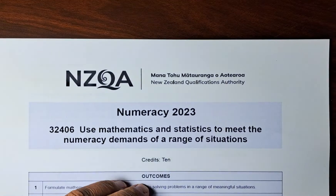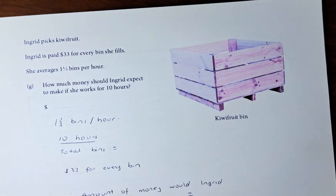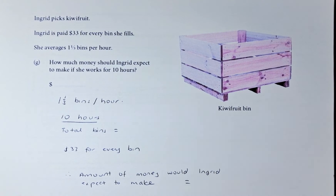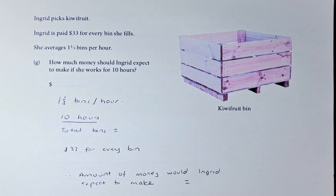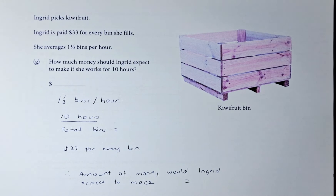Okay, question 1G looks like this — let's read it together. Ingrid packs kiwi fruit. She is paid $33 for every bin she fills. She averages about one and one third bins per hour. How much money should Ingrid expect to make if she works for 10 hours?